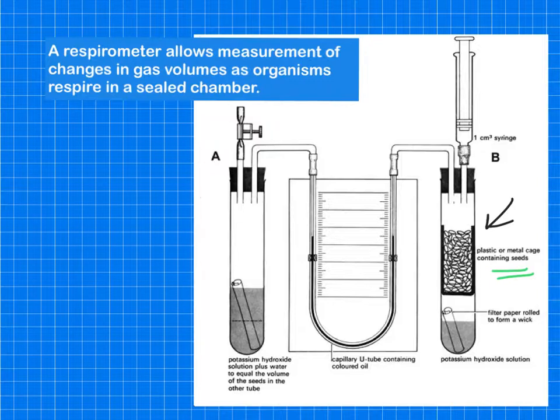And in B we have some seeds that are germinating. As these organisms respire, they're going to consume oxygen and they're going to produce CO2. That CO2 is absorbed by the potassium hydroxide and the volume of gas in the tube will fall and it reduces the pressure and allows the liquid in the capillary tube to be pushed towards tube B.